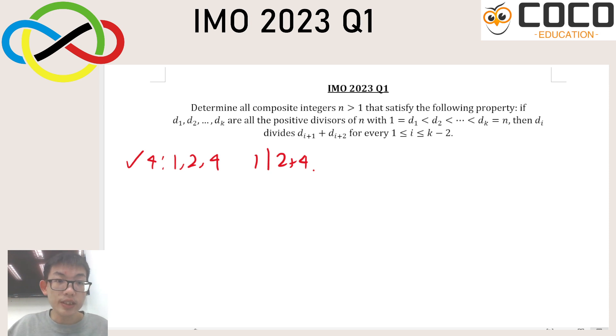Next, composite integer is 6, where the factors are 1, 2, 3, and 6. Now, 1 does divide 2 plus 3, but 2 doesn't divide 3 plus 6, and so therefore, 6 does not work.